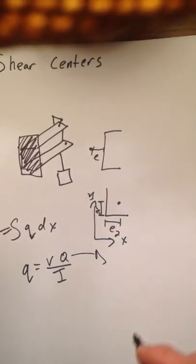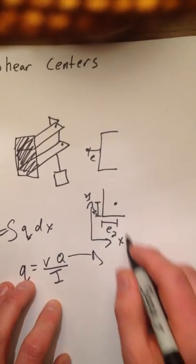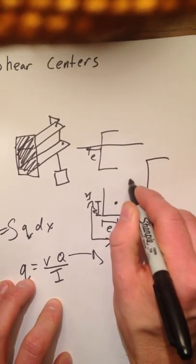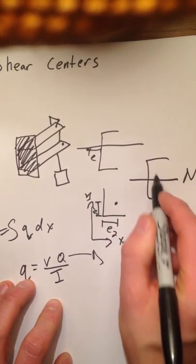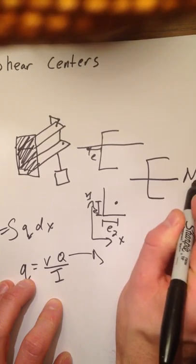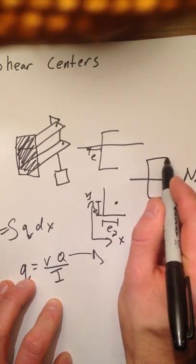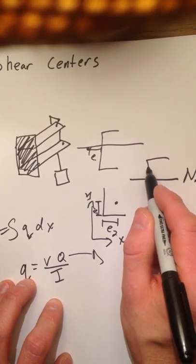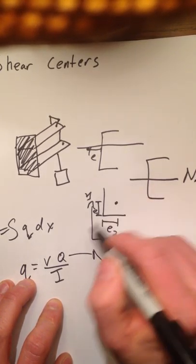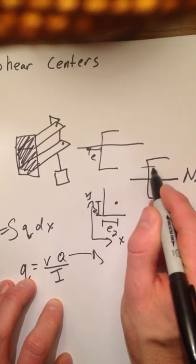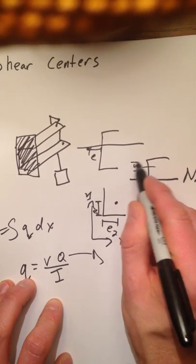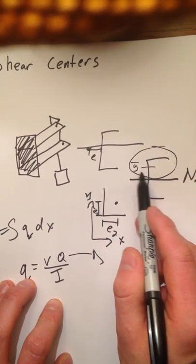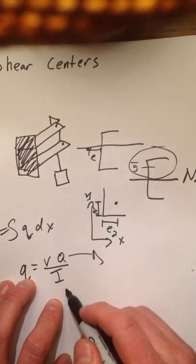Basically, if that's the neutral axis, and all of this is this new area, then the big Q would be whatever the centroid is in just this area here. I'm just making a guess and saying it's there.